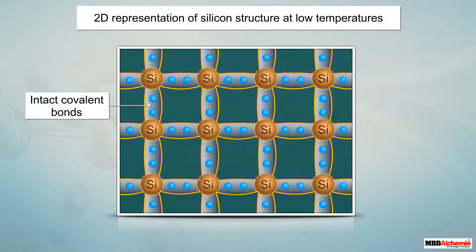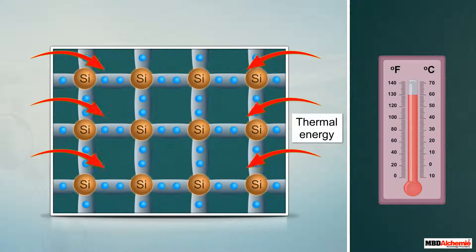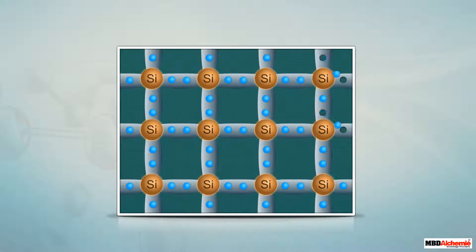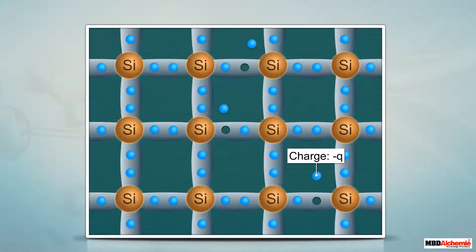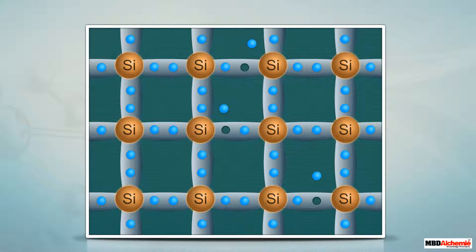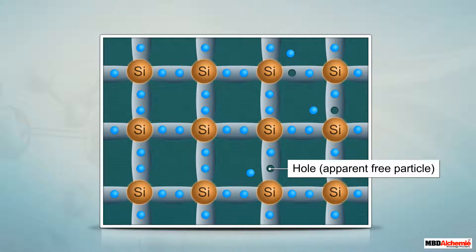The figure schematically shows the two-dimensional representation of a silicon structure. At low temperatures it shows an idealized picture in which all the covalent bonds are intact. As the temperature increases, more thermal energy becomes available to the valence electrons. As a result, some electrons may break away from the covalent bonds, becoming free electrons that contribute to conduction. Such breaking away creates a vacancy in the bond; if the free electron carries charge minus q, it leaves a vacancy with effective charge plus q. This vacancy with effective positive electronic charge is called a hole. An electron from the nearest covalent bond escapes and fills the hole, thereby creating a hole at a new position, and the hole behaves as an apparent free particle.